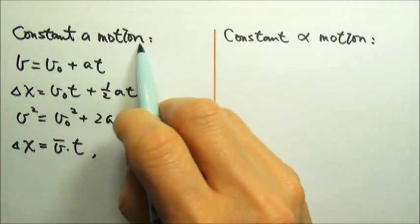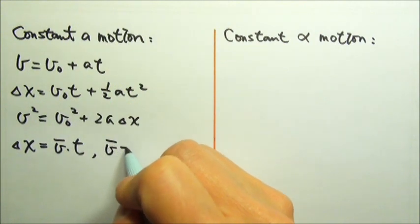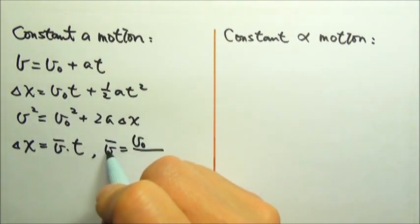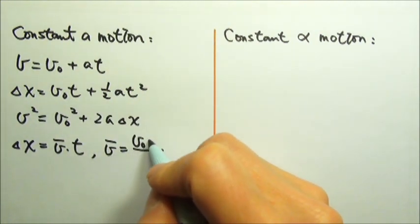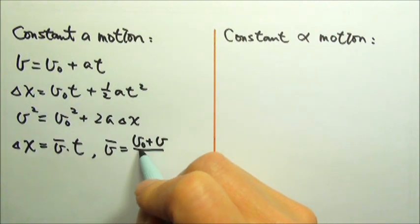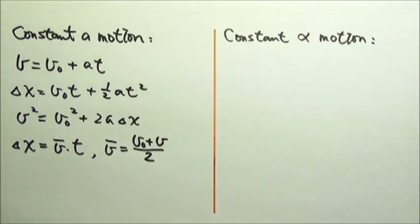But for constant acceleration motion, the average velocity can be found by finding the average of the initial and final velocities.